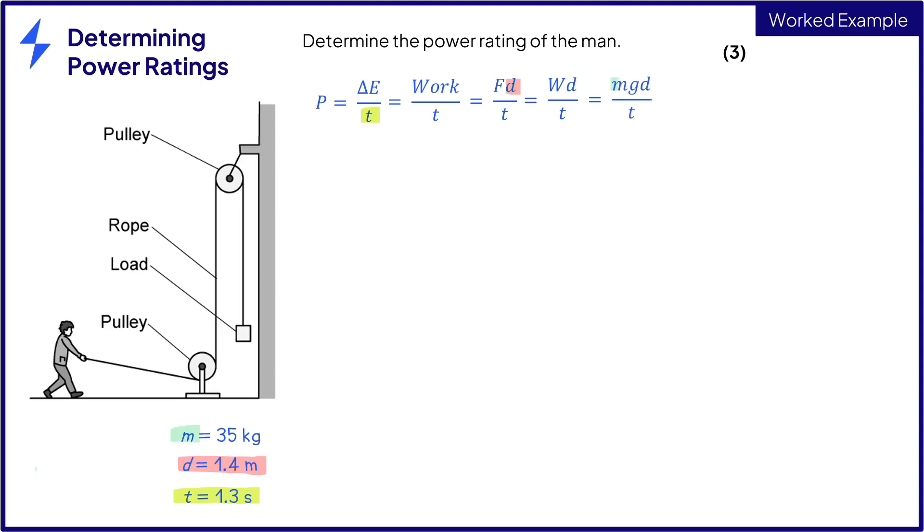So we're given mass and we know that g is equal to 9.8 newtons per kilogram so we have g and now we have all the variables needed to solve the equation.